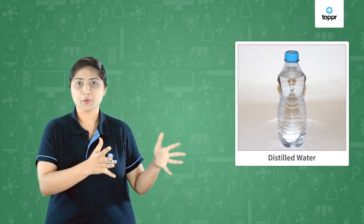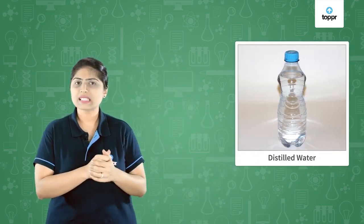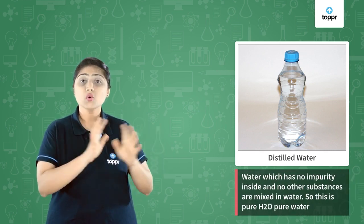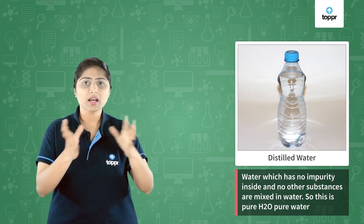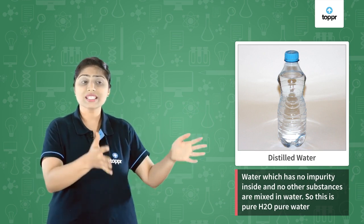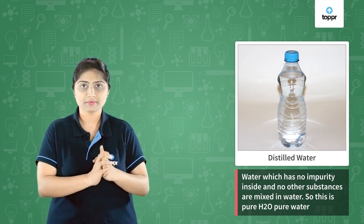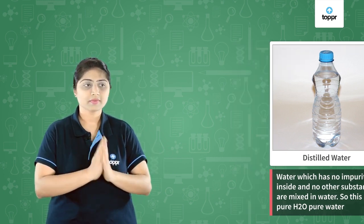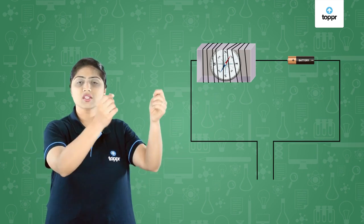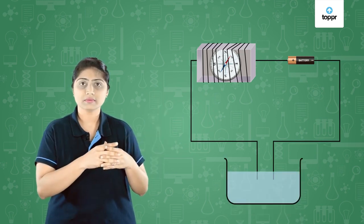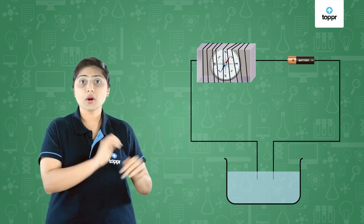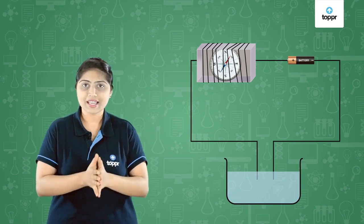Now let us take distilled water. What is distilled water? It is water which has no impurities — no other substances mixed in it. So this is pure H₂O, pure water. Now let us test whether distilled water conducts electricity or not. We put the wires of our tester inside the water. Do you see any deflection in the needle? No. That means distilled water does not conduct electricity.